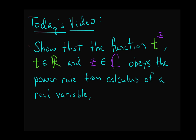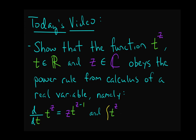Namely, we're going to show that the function t to the z, where t is a real number and z is a complex number, obeys the usual power rule. The derivative d/dt of t^z equals z times t^(z-1), and the indefinite integral of t^z dt equals t^(z+1) all over z+1. Our goal is to prove these facts in this video.